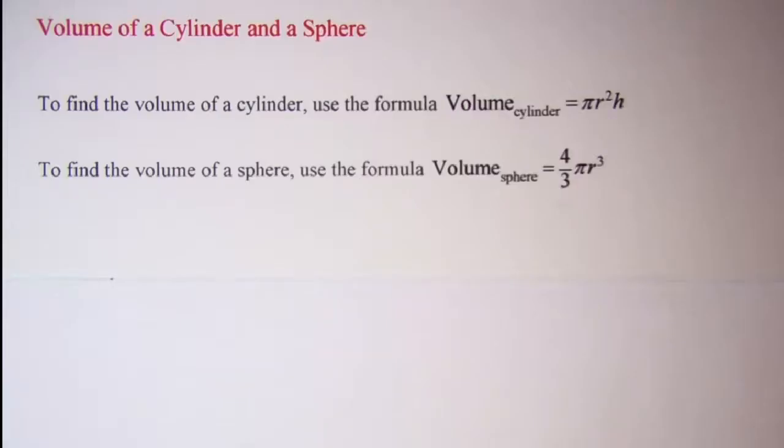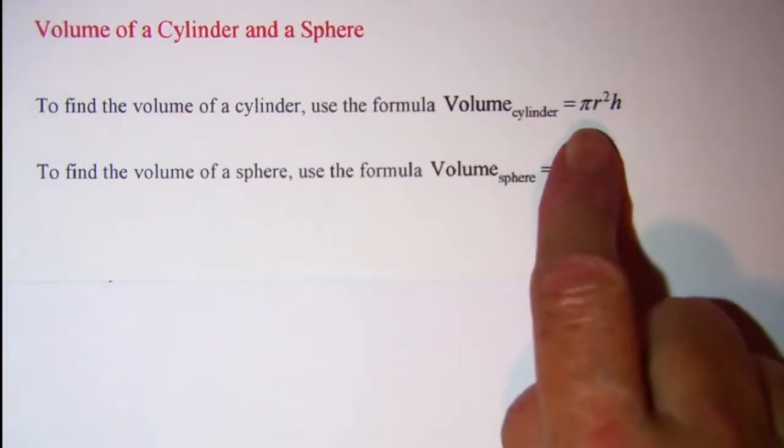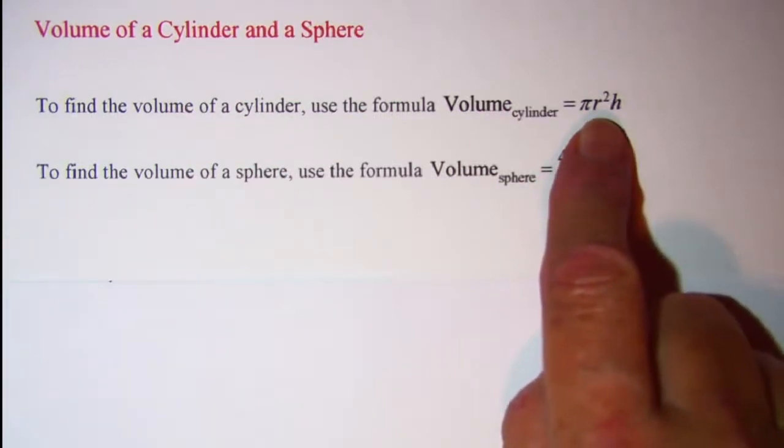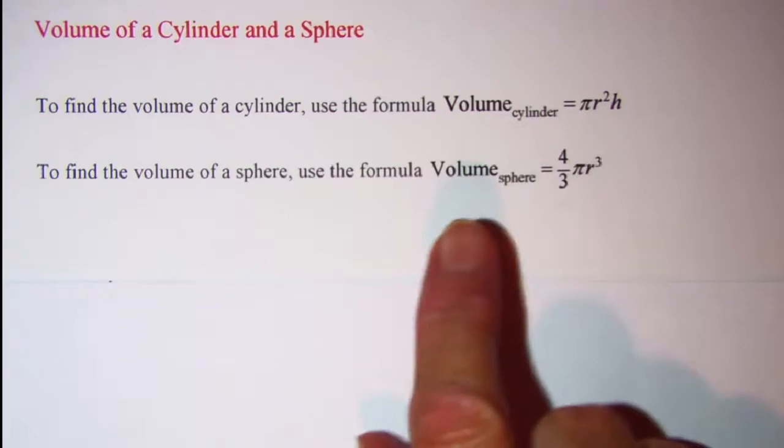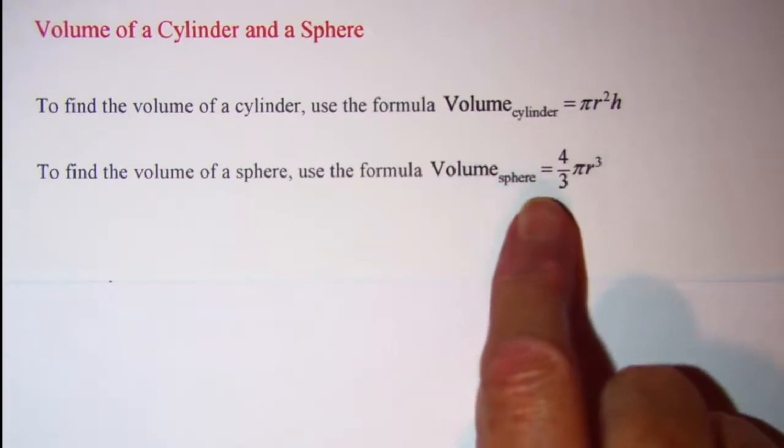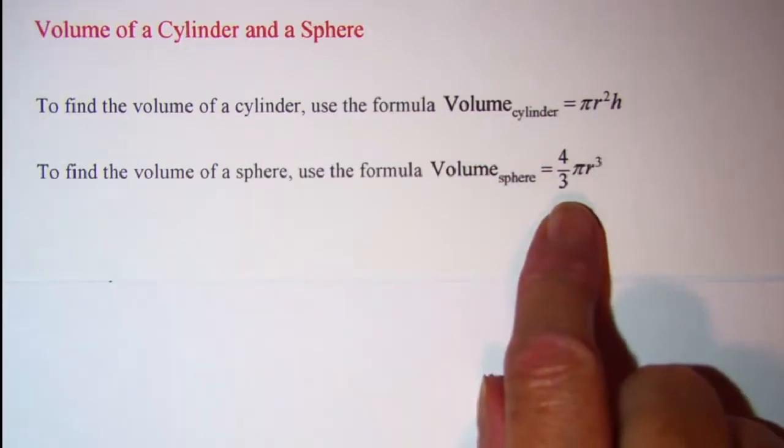In this video we'll be finding the volume of a cylinder and a sphere. To find the volume of a cylinder, use the formula volume equals pi r squared h. To find the volume of a sphere, use the formula volume equals 4 thirds pi r cubed.